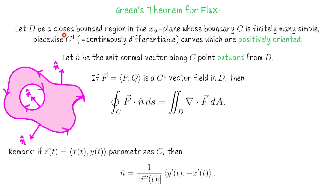For this theorem we assume that D is a closed bounded region in the xy-plane whose boundary C consists of finitely many piecewise continuously differentiable curves which are positively oriented — meaning that if you're driving around C, the region D is on your left. Let n be the unit normal vector along C pointing outward from the region D. Here I've sketched a sample domain where the shaded region is D, with two boundary curves positively oriented, and three examples of this unit normal vector pointing outward.